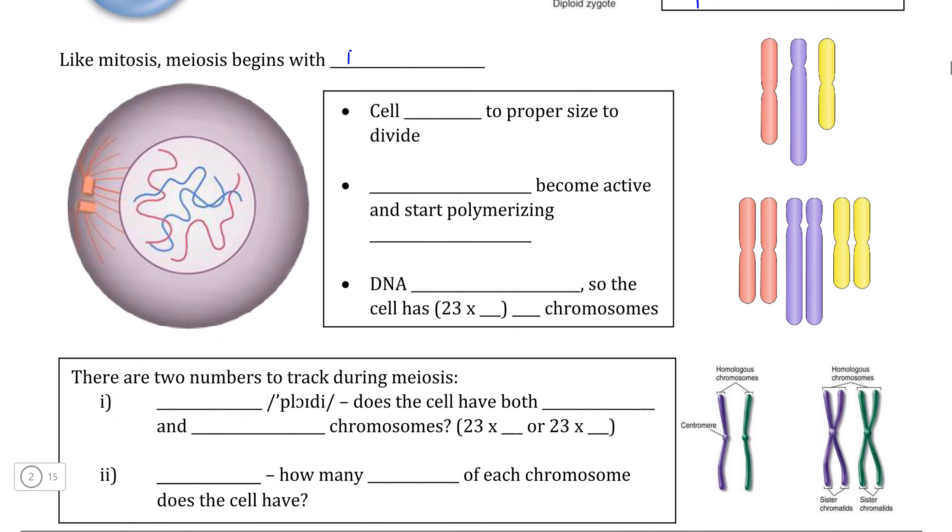Just like with mitosis, we can begin meiosis by talking about interphase, which occurs basically identically to interphase in mitosis. Firstly, we need the cell to grow large enough so that it has double the amount of cytoplasm, double the amount of cell membrane, and double the amount of organelles in order to create two identical daughter cells, or at least that's what it would be in mitosis. In meiosis, the DNA is going to undergo a little bit of recombination, but we will get to that in the next video.